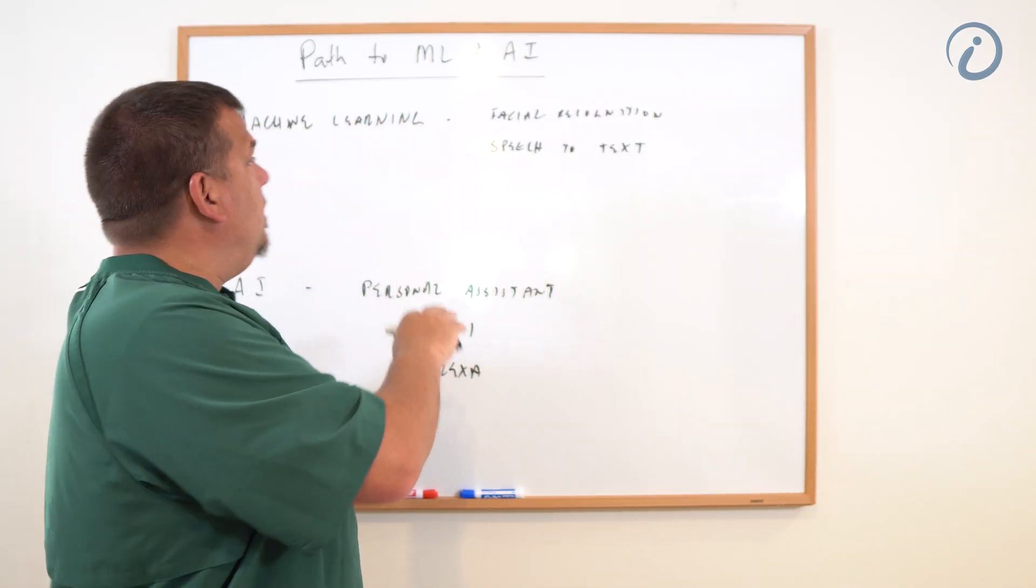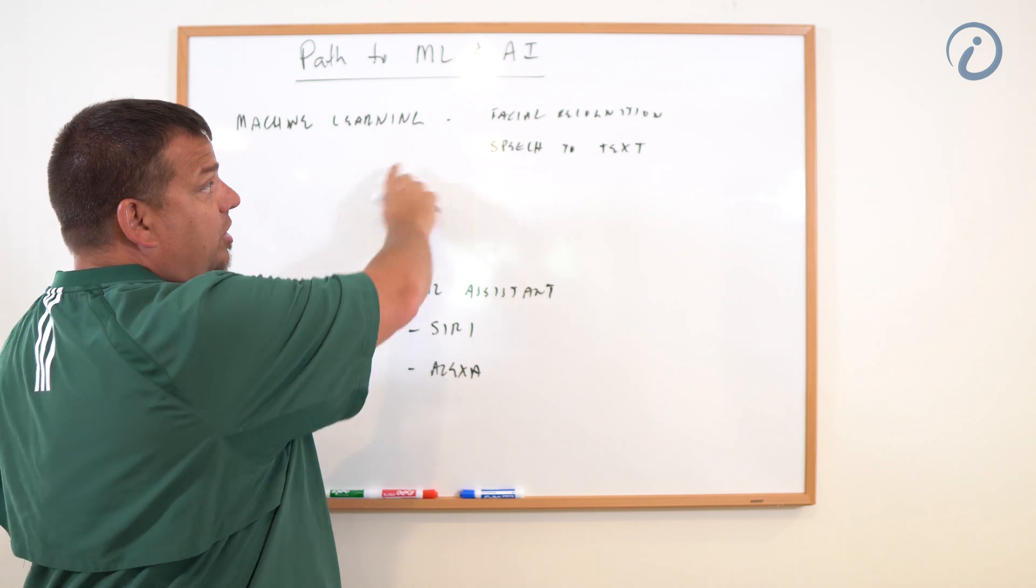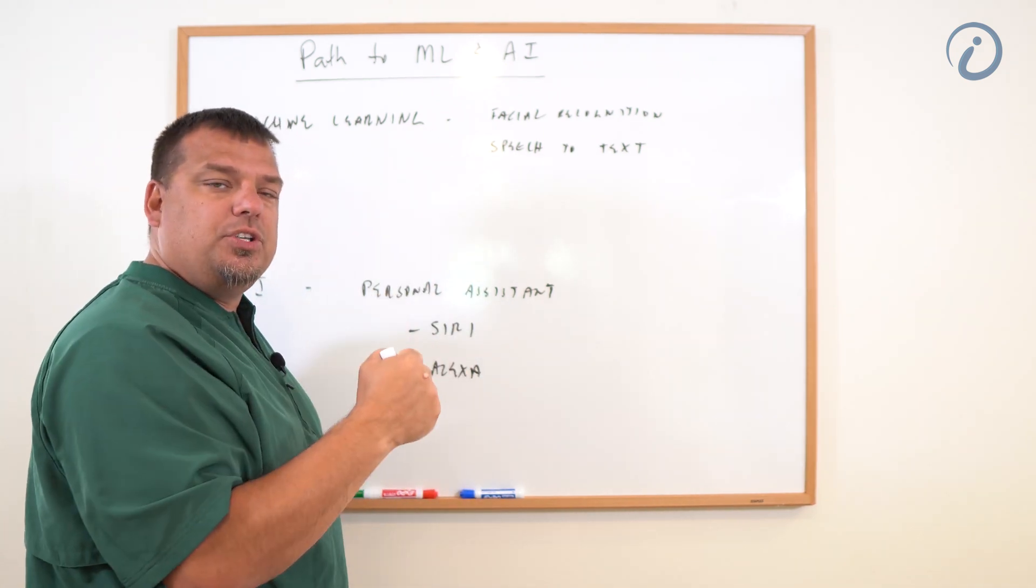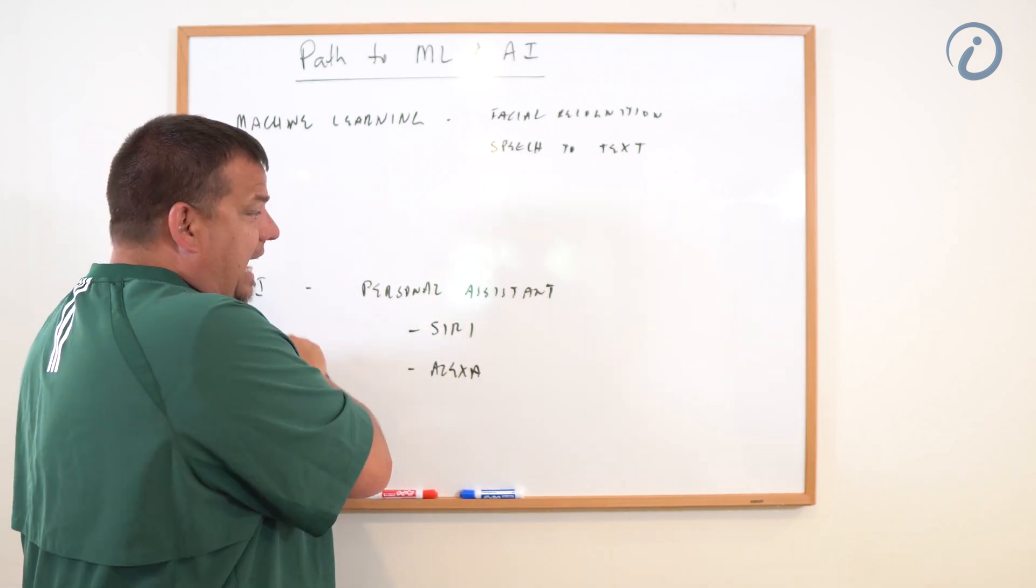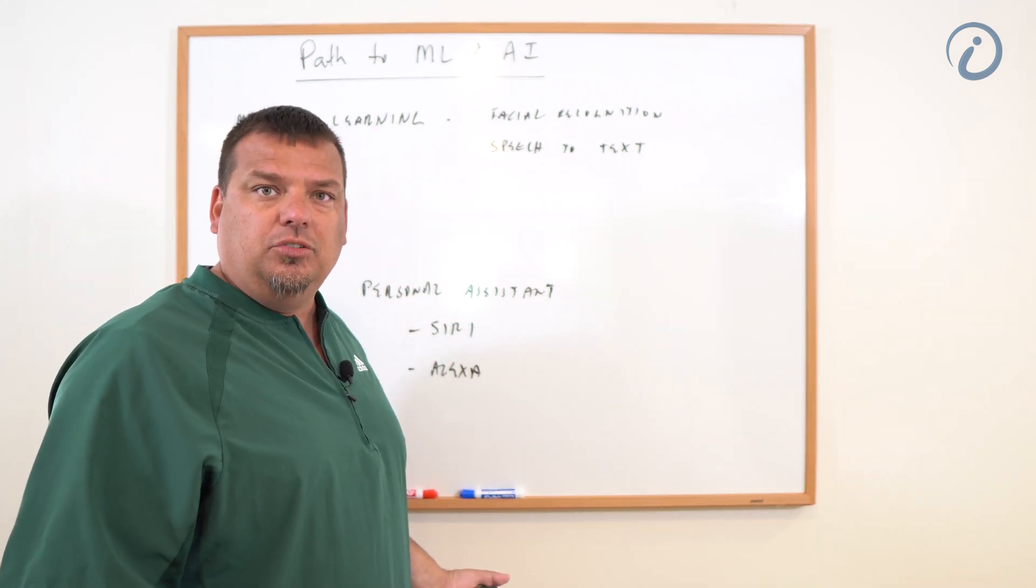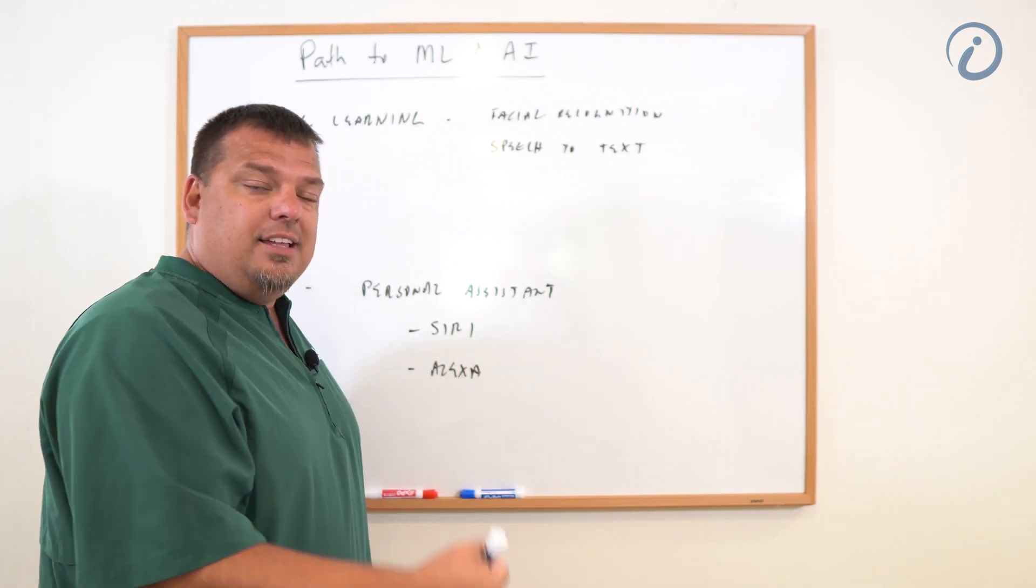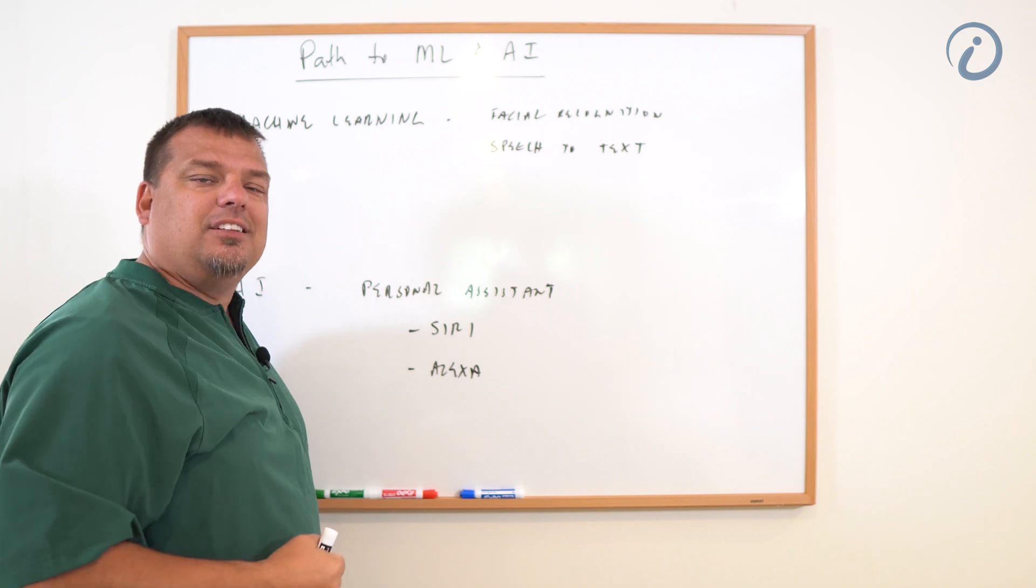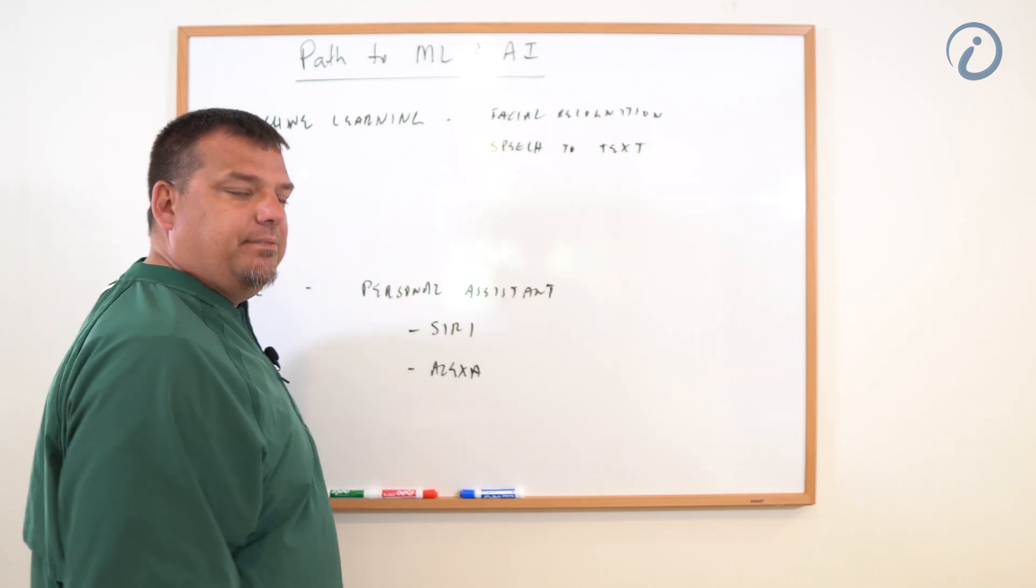So again, those are examples of machine learning and AI. Machine learning is accurately predicting which face you're looking at, accurately predicting which voice you're listening to and what they're saying. The AI is the personal assistant telling me which restaurant I should go to, making the decision for me, the optimal decision based on the accurate information that's been collected by machine learning. All right, there's the examples.